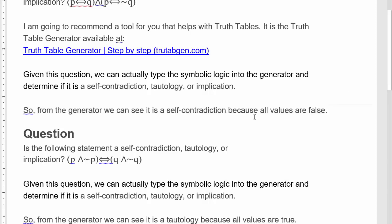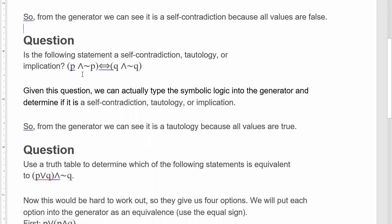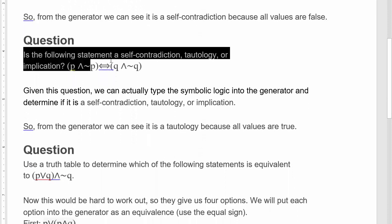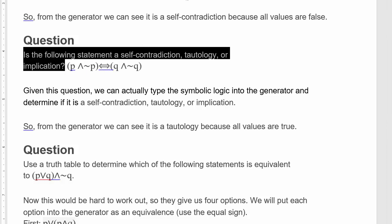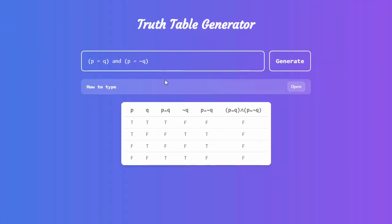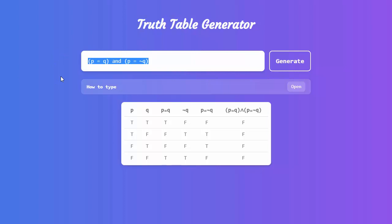So if they're all false, it's a self-contradiction — self-contradiction because all the values are false. So next question: is the following statement a self-contradiction, a tautology, or an implication? We've got something slightly different here. We've got p ∧ ¬p is equal to q ∧ ¬q. I like to use the little tilde for not p.